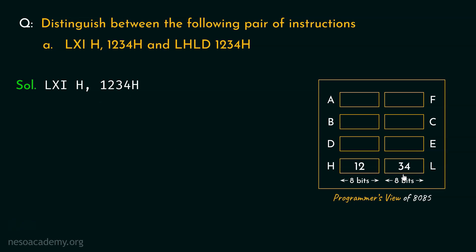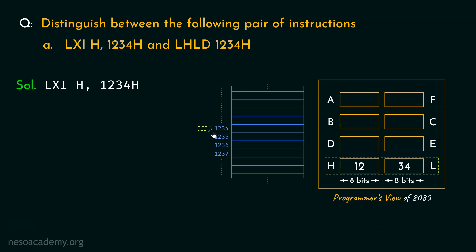When the microprocessor executes this instruction, the value 1234H is immediately loaded into the HL register pair. The higher-order byte is loaded in the H register and the lower-order byte is loaded in the L register. This loaded value will then be treated as an address, pointing to memory location 1234.